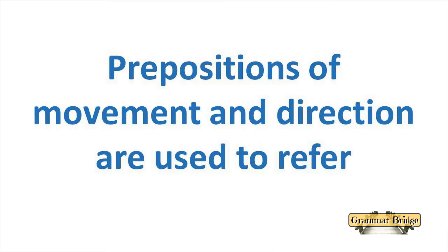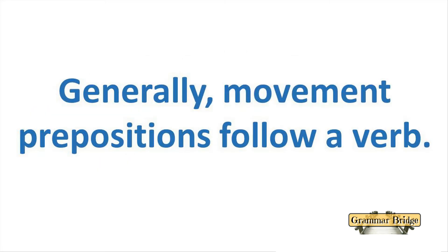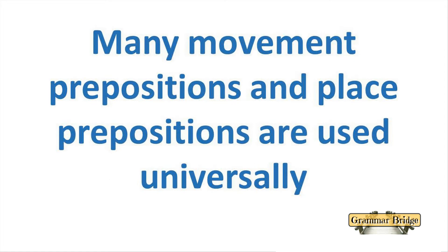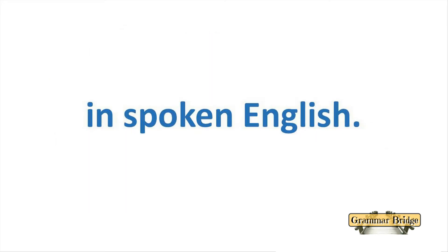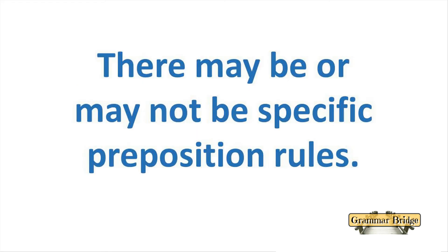Prepositions of movement and direction are used to show movement from one place to another. Generally, movement prepositions follow a verb. These are used to refer to specific places or general places. Many movement prepositions and place prepositions are used universally in spoken English. Study prepositions in simple usage. There may or may not be specific preposition rules.